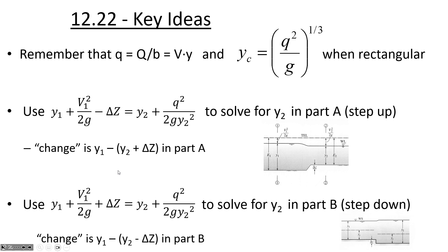That's what they mean by change in part a. In part b, things are different. Instead of minus delta z for a step up, if there's a step down, that's adding specific energy from 1 to 2 — so it's a plus delta z if it's a step down. You'll get a discrete number on the left-hand side because V is known, Y at 1 is given, and delta z is given. The only unknown on the right-hand side is going to be y2. The change they're talking about will be the original depth minus the depth minus delta z, because it's a step down. They want to see that little deflection where the water depth is increasing — what is the magnitude of that vertical deflection.